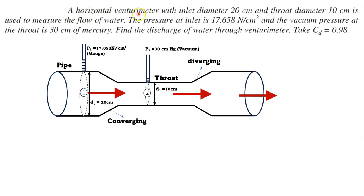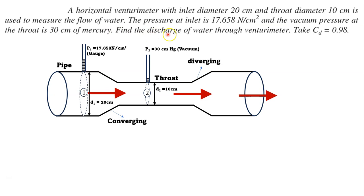A horizontal Venturimeter with inlet diameter 20 cm and throat diameter 10 cm is used to measure the flow of water. The pressure at inlet is given as 17.658 Newton per centimeter square and the vacuum pressure at the throat is 30 cm of mercury. Find the discharge of water through the Venturimeter; take Cd, the discharge coefficient, equal to 0.98.